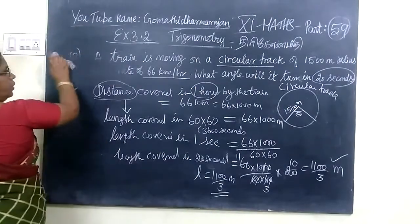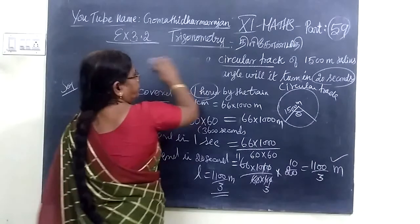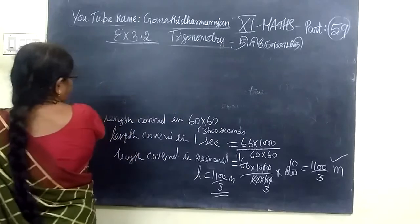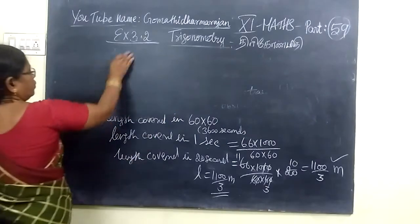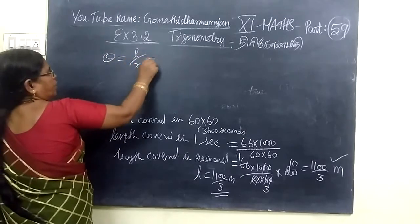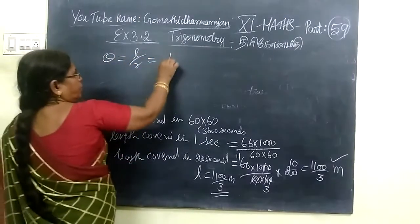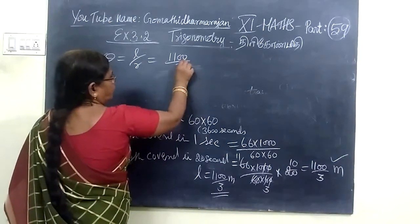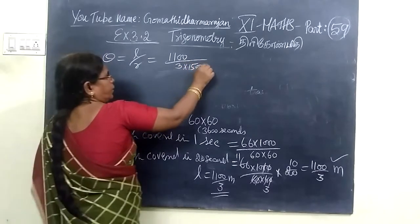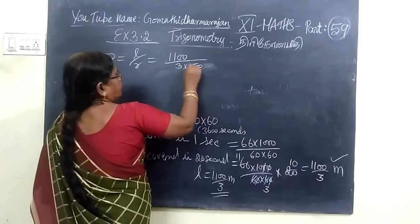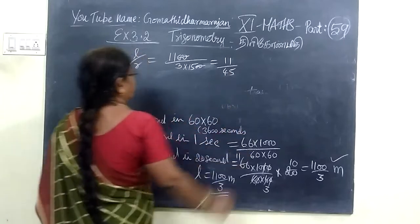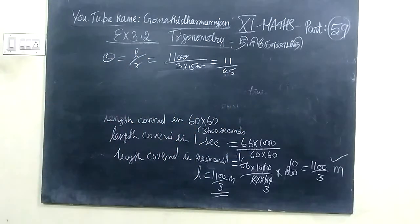So we want to find the angle. We know the formula L equals theta times R. So, theta is equal to L by R. L is 1100 by 3, and R is 1500 meters. So this answer is 11 by 45.